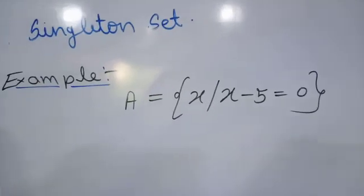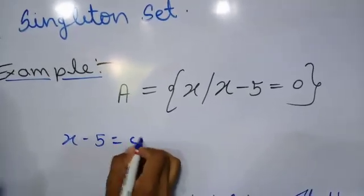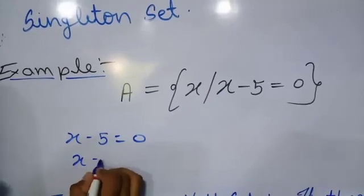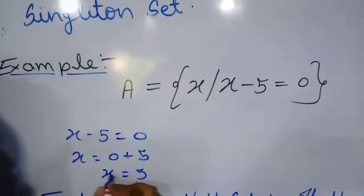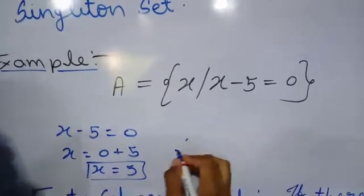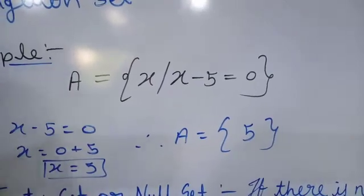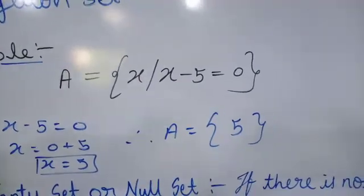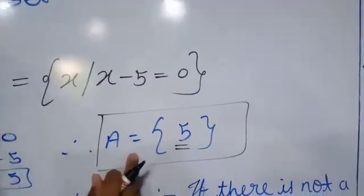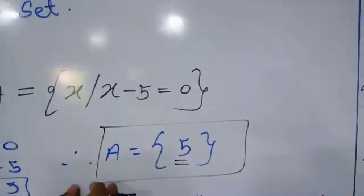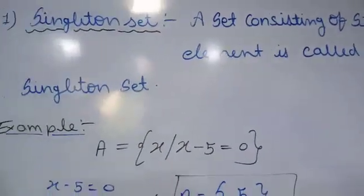Just solve it. We have x minus 5 is equal to 0, so x is equal to 0 plus 5, that means x is equal to 5. Therefore set A is equal to {5}. You can see we have just only one element, that is 5, in set A. Therefore it is called a singleton set.